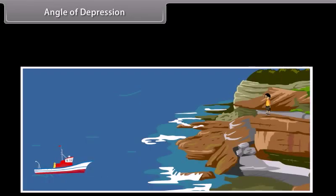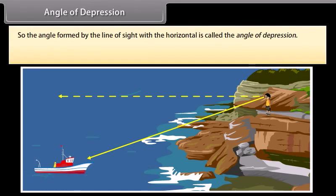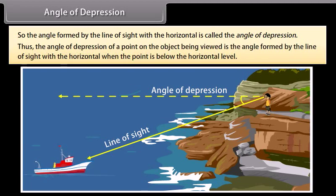Now consider the situation when a boy is standing at the cliff and is looking down at the boat. Here the line of sight is below the horizontal level. So, the angle formed by the line of sight with the horizontal is called the angle of depression. Thus, the angle of depression of a point on the object being viewed is the angle formed by the line of sight with the horizontal when the point is below the horizontal level.